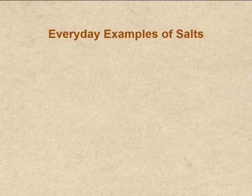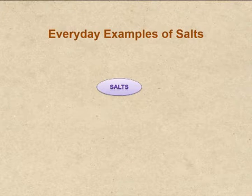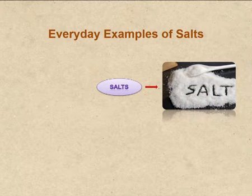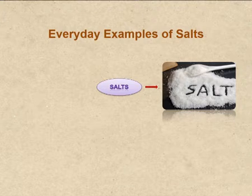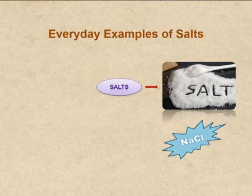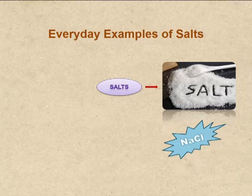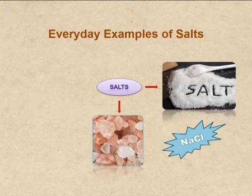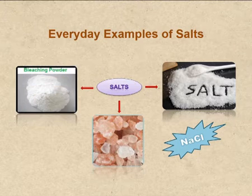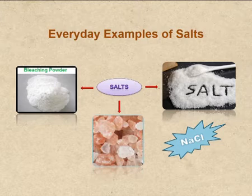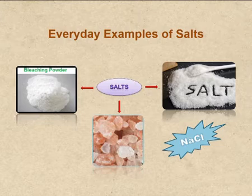Let us now see where we can find salts. The most common ingredient needed in almost all cooked food is common salt, which is neutral in nature. Common salt is chemically NaCl, but remember NaCl is not the only salt — there are many other salts. Rock salt is considered best among all salts for the human body and is advised in daily food as per Ayurveda. Bleaching powder, also called calcium chloro-hypochlorite, is a mixed salt of hydrochloric acid and hypochlorous acid.